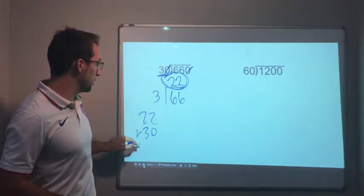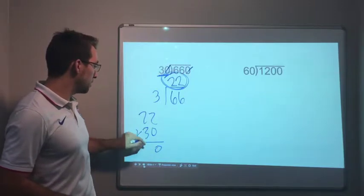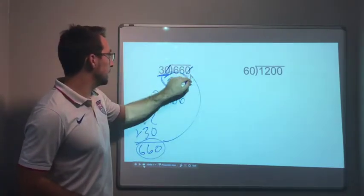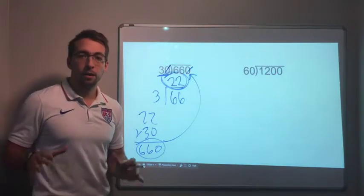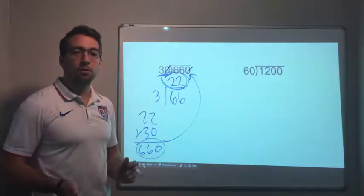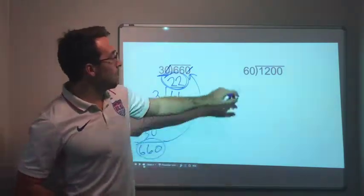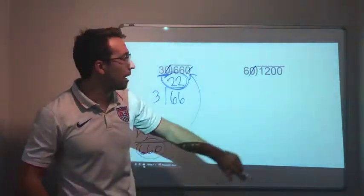And we'll check it. 22 times 30. Here's the original question. What do you get? 660. It matches. You have to keep balance. If you take a zero out of the divisor, you have to take a zero out of the dividend. Simple as that.